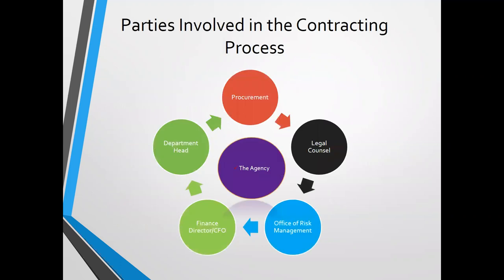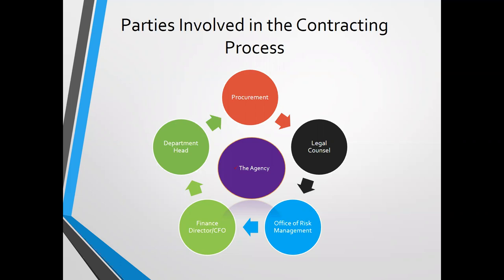Risk management sits on the outside; the agency is typically the central point of any of these contracts, whether it's a procurement contract or leasing space for a special event. You have your procurement department, legal counsel, the Office of Risk Management, your on-site risk management professionals, finance, and typically the department head giving authorization. Understanding where we stand in this process is important because we're not here to mandate — we're here to provide specific recommendations and position you in the best possible scenario from a risk standpoint.